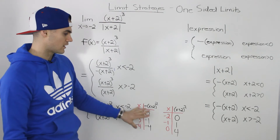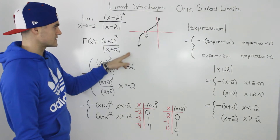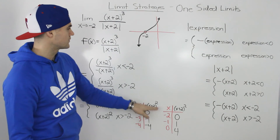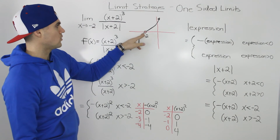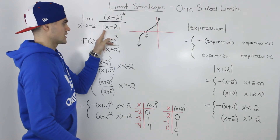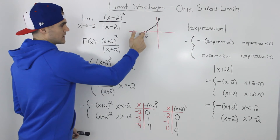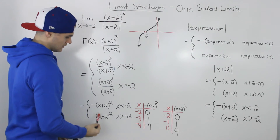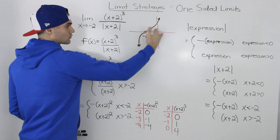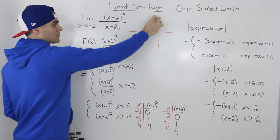Now that we have these tables, we can comfortably graph this piecewise function. At the x value of negative 2, there's a hole at y equals 0 because the function is undefined there. For all x values less than negative 2, it's a downward-opening parabola, negative bracket x plus 2 squared. For all x values greater than negative 2, it's an upward-opening parabola, x plus 2 squared.